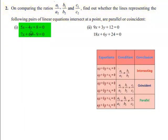The first set of equations is 5x minus 4y plus 8 equals 0 and 7x plus 6y minus 9 equals 0. So writing down the first set of equations: 5x minus 4y plus 8 equals 0 and 7x plus 6y minus 9 equals 0.